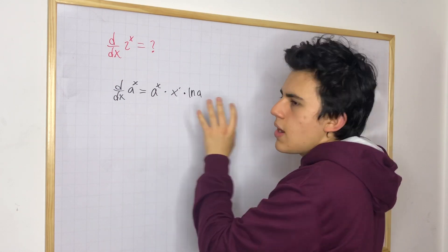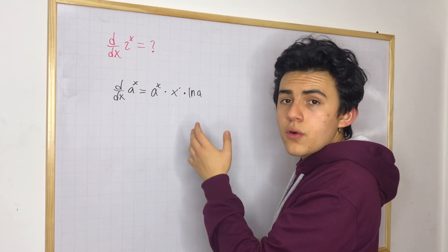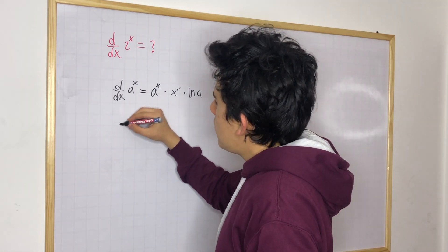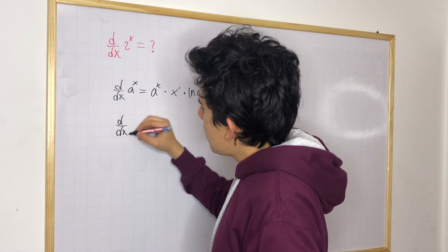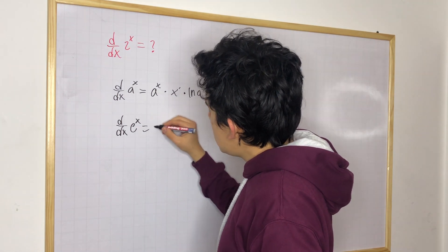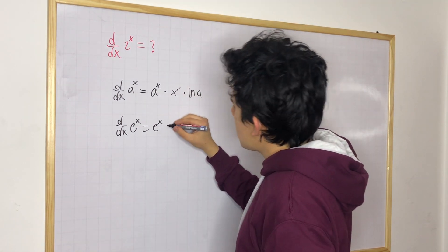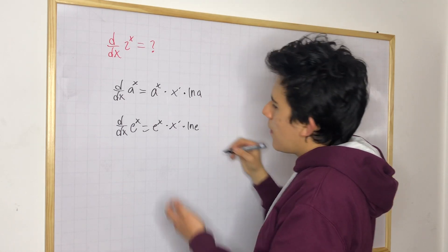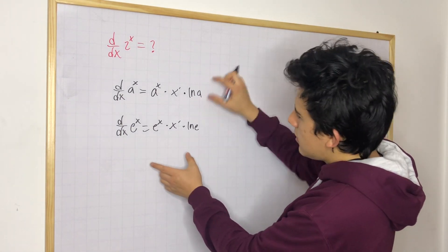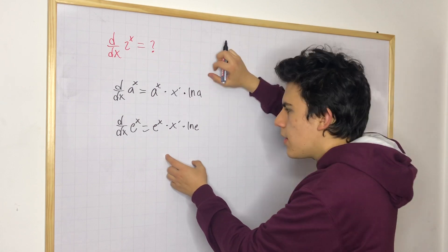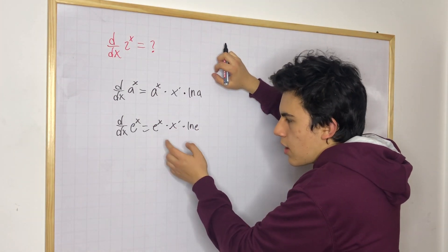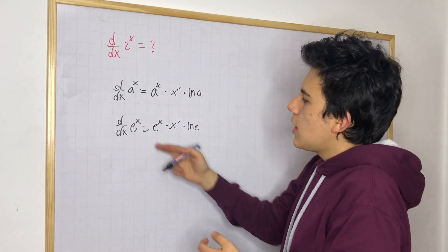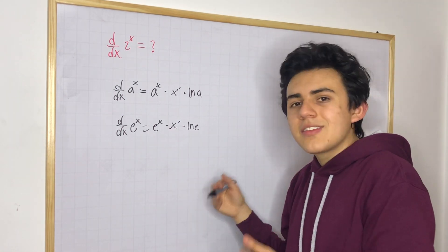This is very similar to the rule for differentiating e to the x. If you have seen it, the derivative of e to the x is e to the x, but there is something else. You also have x prime times natural log of e. You can see it's the same thing that we have on top. X prime goes to 1 and natural log of e is also 1. So we just say that the derivative of e to the x is e to the x.